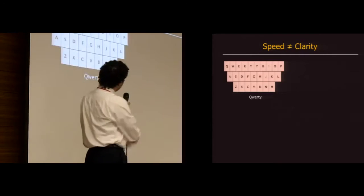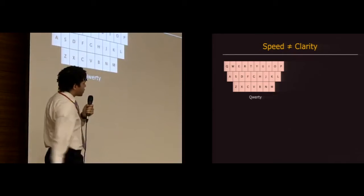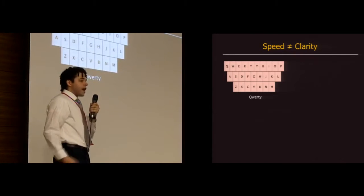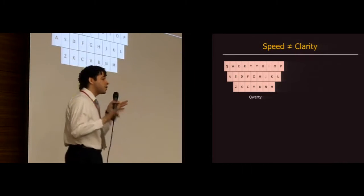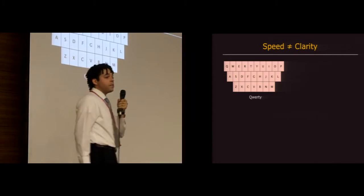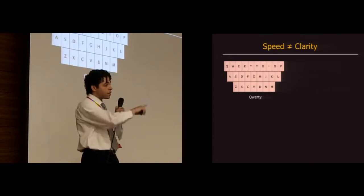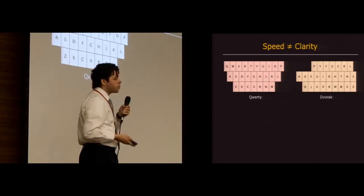Second issue is that optimizing for speed as existing optimized layouts do is a totally different animal than optimizing for gesture clarity. So QWERTY, which is sort of the de facto status quo layout, is actually optimized for two-handed typing so that you frequently alternate hands when you're typing. But if you translate that to word gestures, that means the gestures are going back and forth across the keyboard and they all look pretty similar to one another.